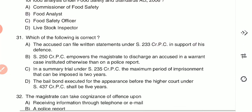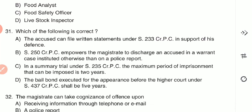Question 31: Which of the following is correct? (A) The accused can file written statements under Section 233 CrPC in support of his defense; (B) Section 250 CrPC empowers the magistrate to discharge an accused in a warrant case; (C) in a summary trial under Section 235 CrPC the maximum imprisonment is two years; or (D) the bail bond under Section 437 CrPC shall be five years. The first statement is correct — the accused can file written statements under Section 233 CrPC.